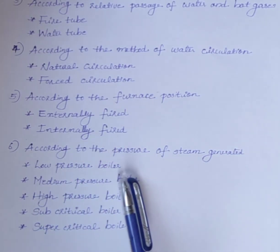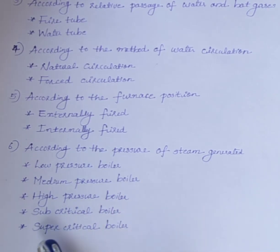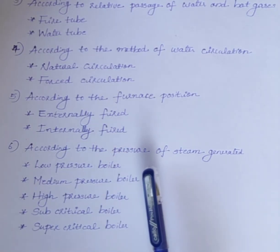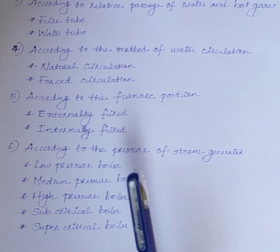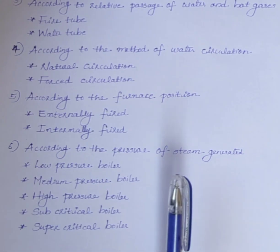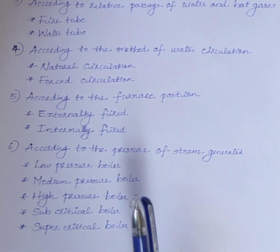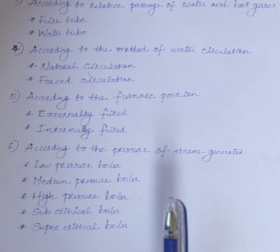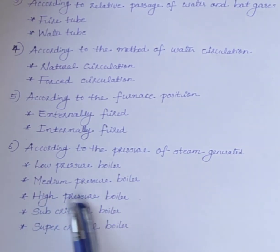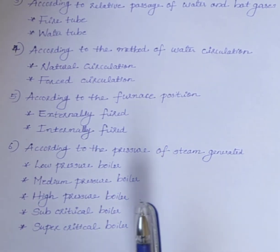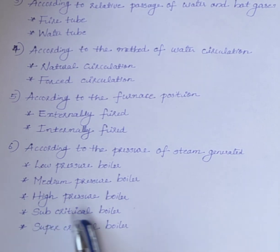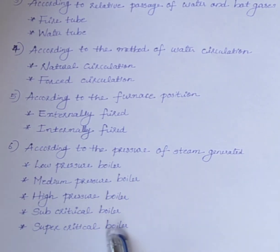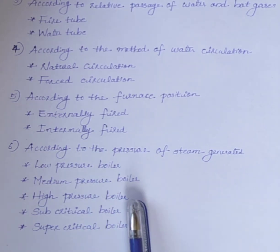The next classification is according to the pressure of the steam generated. Boilers are classified into low pressure, medium pressure, high pressure, subcritical, and supercritical boilers. A low pressure boiler produces steam at 15 to 20 bar and is used for process heating. Medium pressure boilers operate from 20 to 80 bars and are used for power generation or combined power and process heating. High pressure boilers produce steam above 80 bars. Subcritical boilers produce steam below the critical pressure, while supercritical boilers produce steam above the critical pressure.